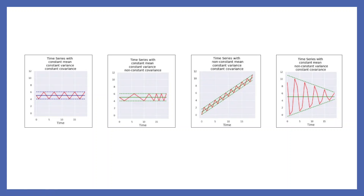The second plot shows a time series with constant mean (the green line) and constant variance, but non-constant covariance — the dark red lines are not equally spaced. The third plot has a non-constant mean (a trend) with constant variance and constant covariance. The fourth plot has constant mean but non-constant variance — the distance between the green dotted lines is not constant — and constant covariance. So the first one is stationary; the second, third and fourth are examples of non-stationary series.